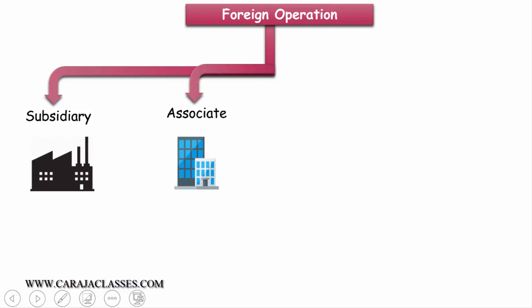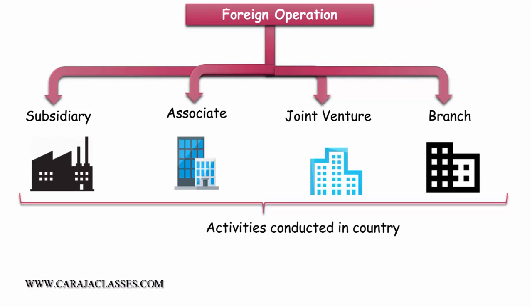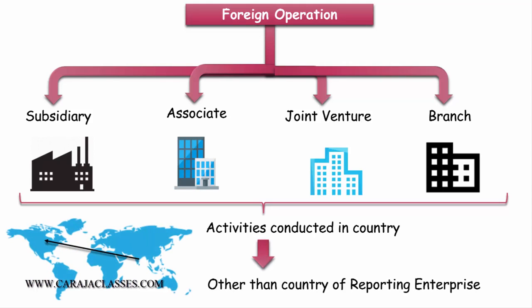Let's understand about integral and non-integral foreign operation definitions, but first we should understand what is a foreign operation. A foreign operation can be a subsidiary, associate, joint venture, or branch where the activities are conducted in a country other than the country of the reporting enterprise. For example, if the reporting enterprise is in India and conducts activities in USA, Australia, or China, then we call it a foreign operation — and it can be a subsidiary, associate, joint venture, or branch.